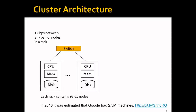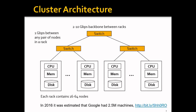Obviously, a single rack is not enough. In 2016, it's estimated that Google had about 2.5 million machines. So apparently we'll need multiple racks, and to connect all these racks you will need a backbone switch. This backbone switch is usually of higher throughput — about 2 to 10 gigabits per second.